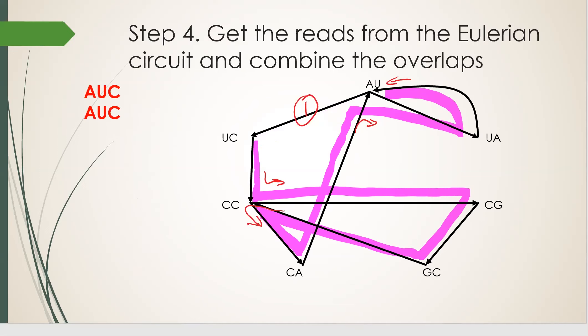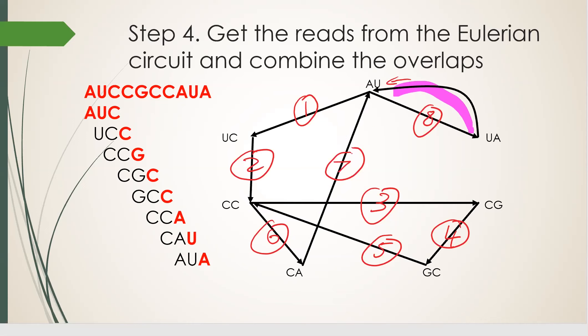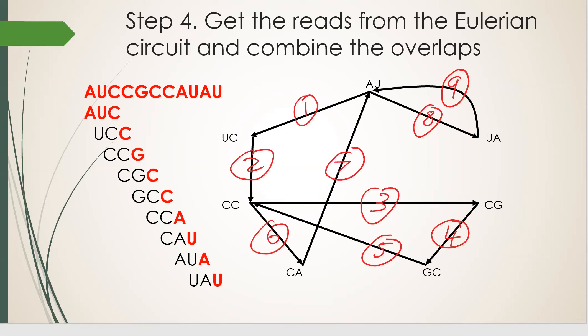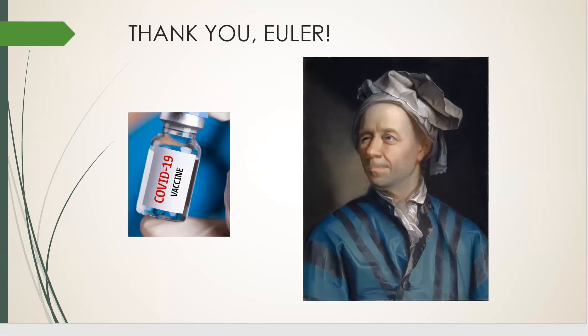Step four. We write down the reads that go with the Eulerian circuit and combine the overlaps to get the gene sequence. Number one, the edge is AUC. Write that down. Number two is UCC, which combined with AUC gets us the sequence AUCC. And we continue with the rest of them. Here we go. We have our gene sequence. That's how graph theory solves COVID, by providing a way to do gene sequencing on tens of millions of reads quickly. Thanks Euler.